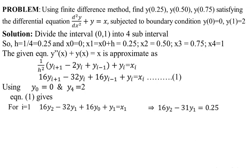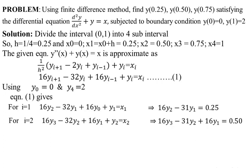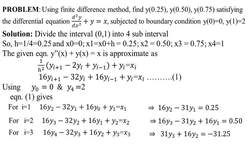For i = 2: 16y₃ − 32y₂ + 16y₁ + y₂ = x₂. Substituting x₂ = 0.50 and rearranging: 16y₃ − 31y₂ + 16y₁ = 0.50. For i = 3: 16y₄ − 32y₃ + 16y₂ + y₃ = x₃. Substituting y₄ = 2 and x₃ = 0.75 and rearranging: −31y₃ + 16y₂ = −31.25.